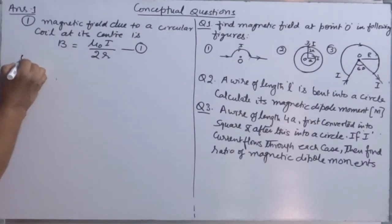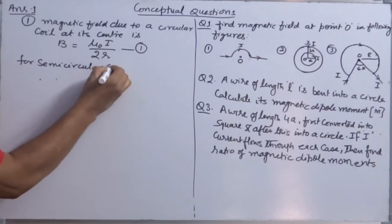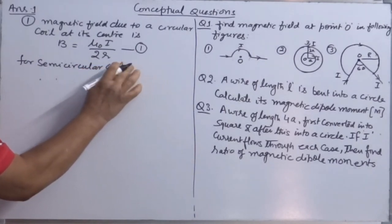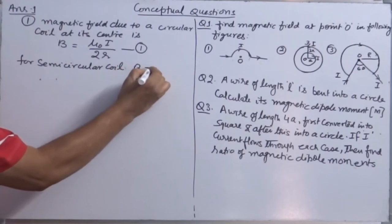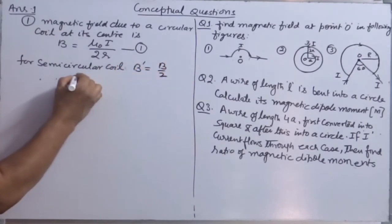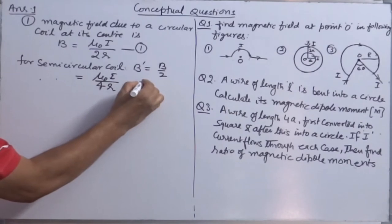So for a semi-circular coil, this will be B' = B/2 = μ₀I/4R. That's the answer.